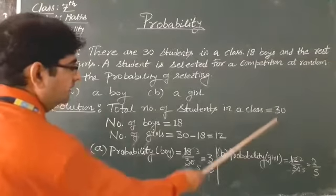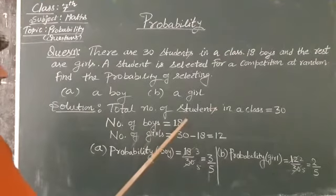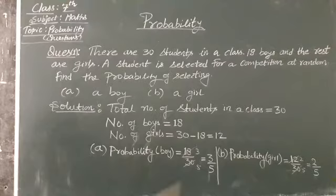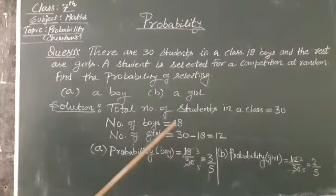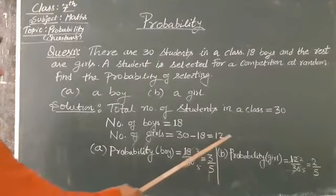Total number of students in the class is 30 and number of boys is 18. You have to find out the number of girls. So, subtracting 18 from 30, that is, from the total subtracting the number of boys, 30 minus 18, we get 12. So the number of girls is 12.